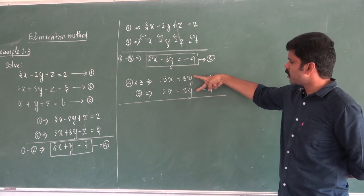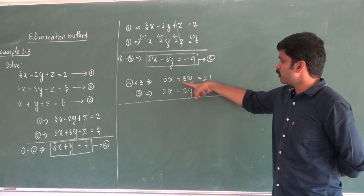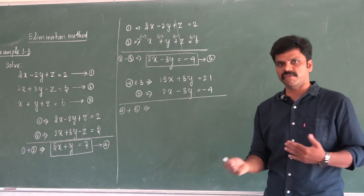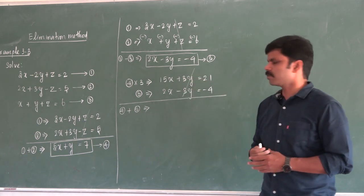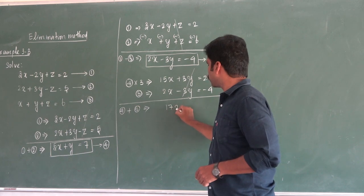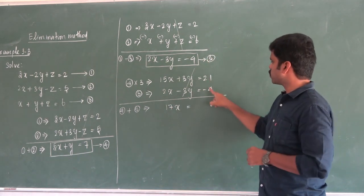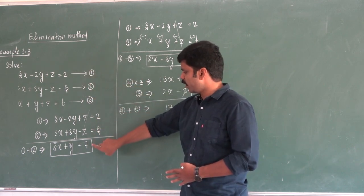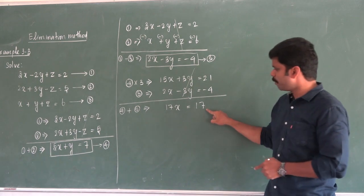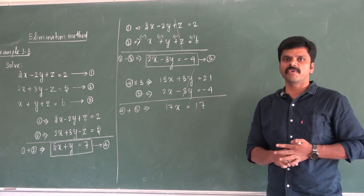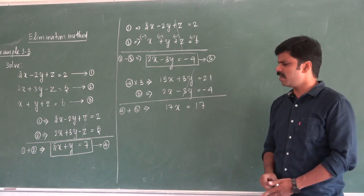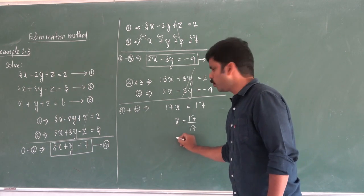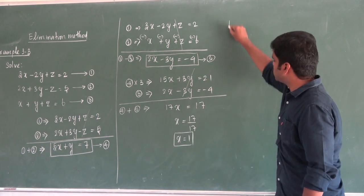Now y is ready to eliminate. If you add these, you will cancel y and get 17x. And on the right-hand side you will get 17. So for 3-variable equations, you reduce to 2 variables, then to 1 variable equation.